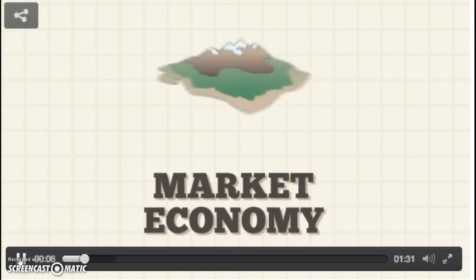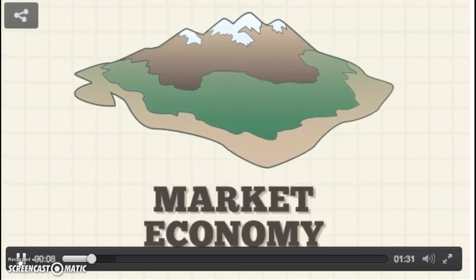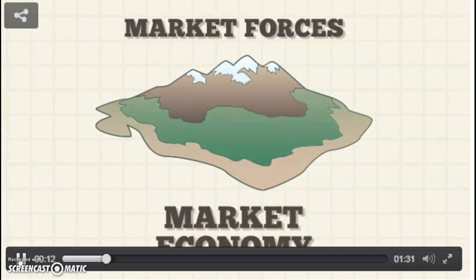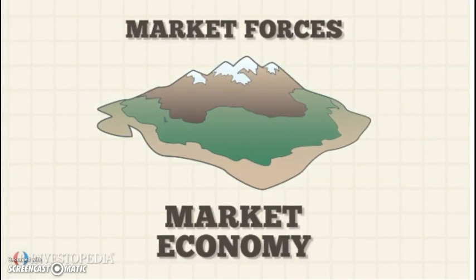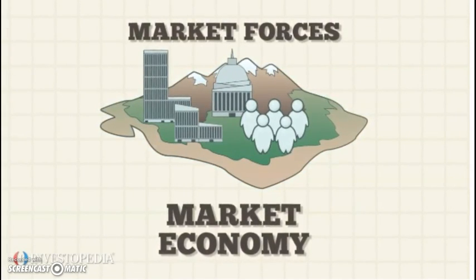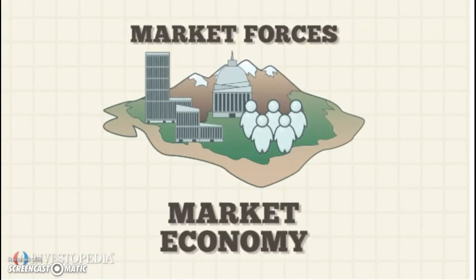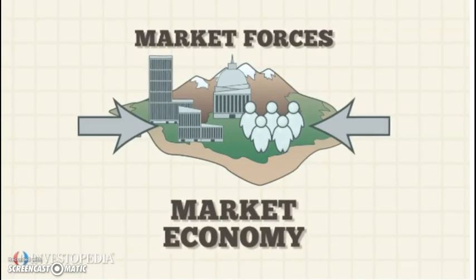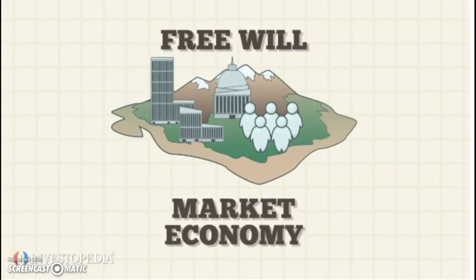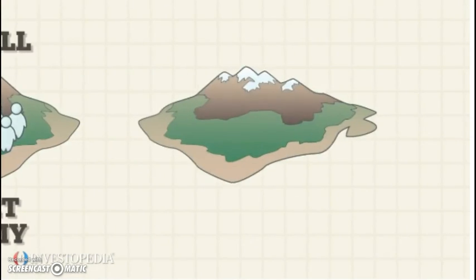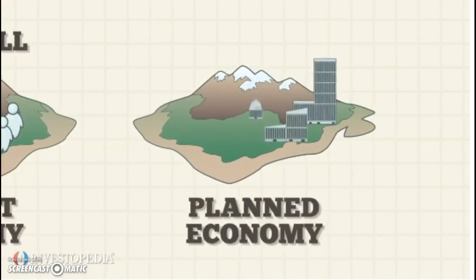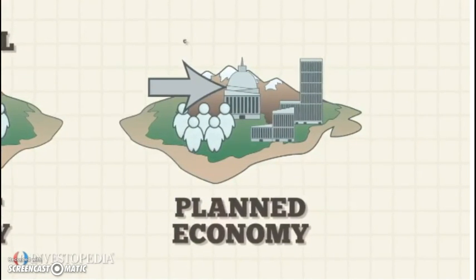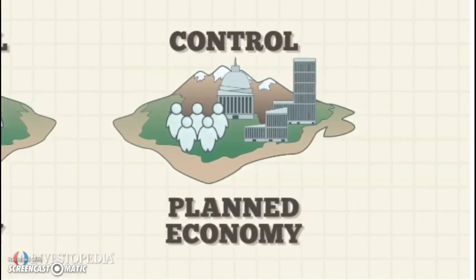In a market economy, economic decisions and prices are determined by market forces rather than by central planning. Market forces refer to the collective effect of all the decisions made by individual participants in the economy, such as consumers and businesses, according to their free will. A market economy is considered the opposite of a planned economy, where a central authority, such as the government or military, controls major aspects of the economy.